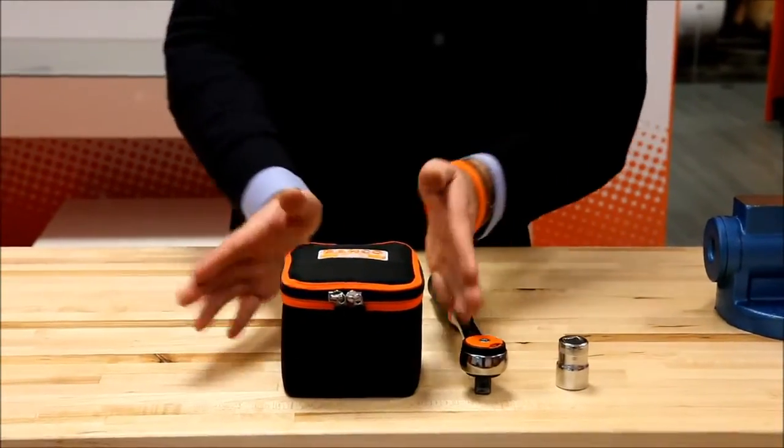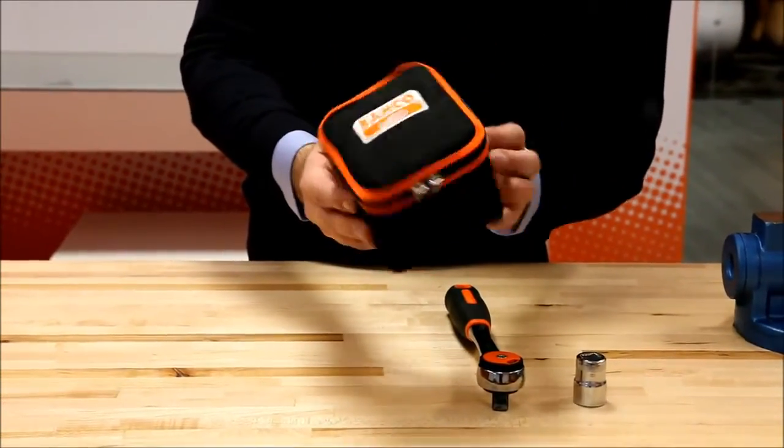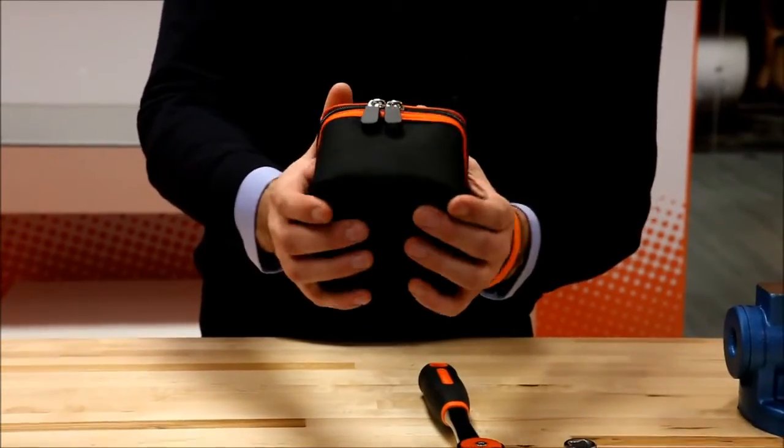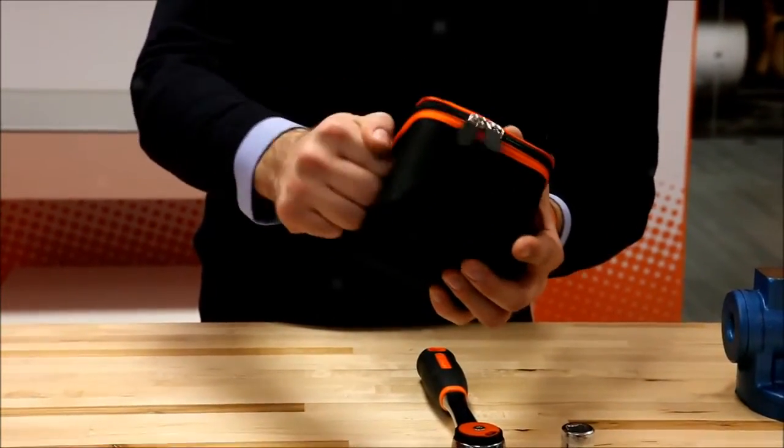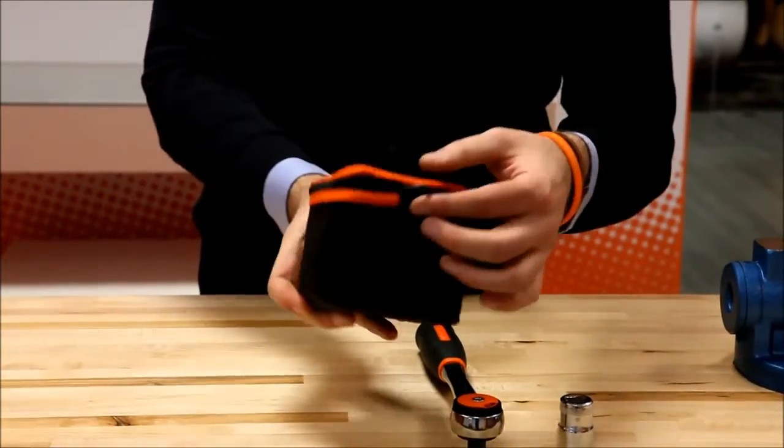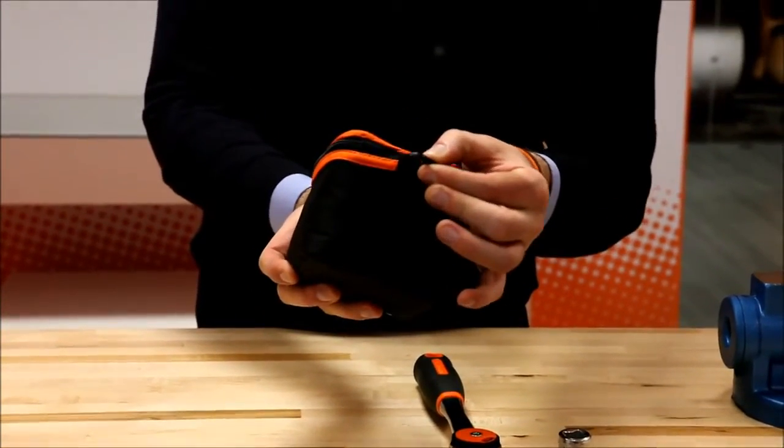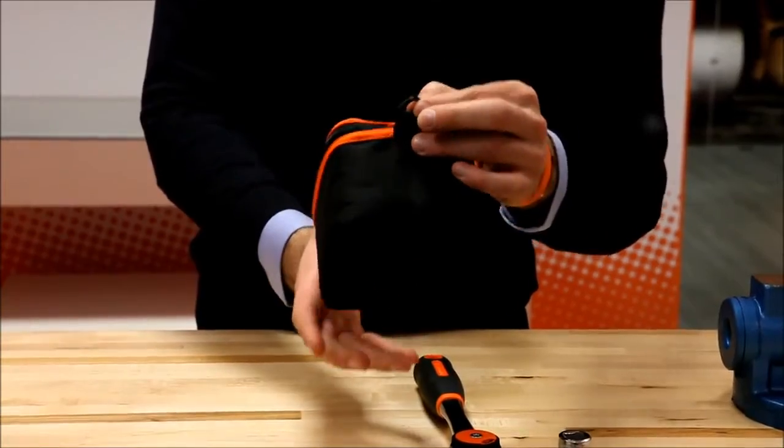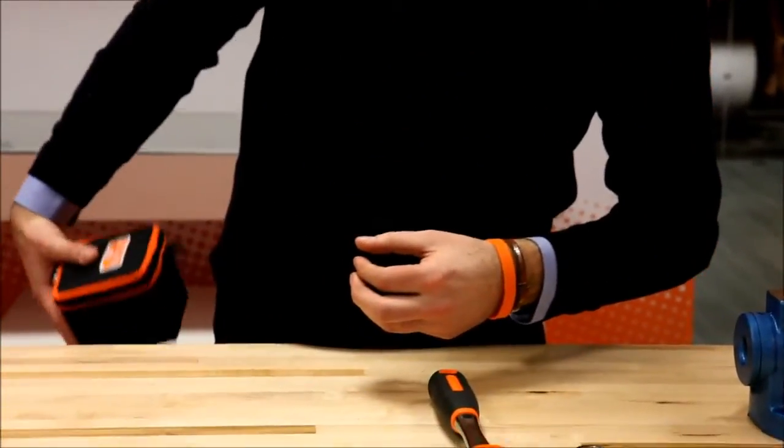Now the product comes in this very nice textile outer case. This also has a foam inlay inside which protects the product. On the back of it we also have this little hook so you can attach it to your belt.